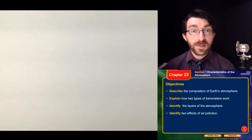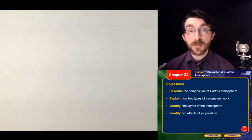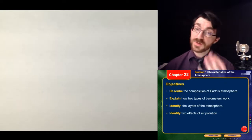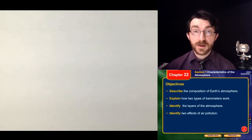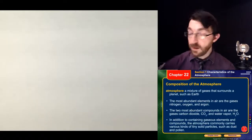There's three sections in this chapter. First section is characteristics of the atmosphere. Second section is solar energy in the atmosphere. And third section is about atmospheric circulation. So we've got these objectives. Describe the composition of Earth's atmosphere, explain how two types of barometers work, identify the layers of the atmosphere, and identify two effects of air pollution.